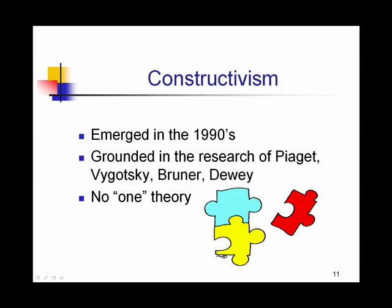The second type of social theory is constructivism. Although this is not really just one theory, it fits in the social cognitive domain, and it is grounded in the work of prior researchers — Piaget, Vygotsky, Bruner, and even Dewey. It did emerge more recently, in the 1990s.